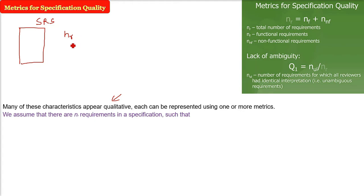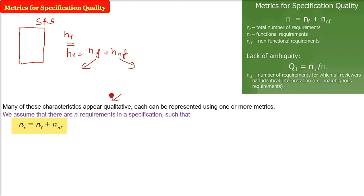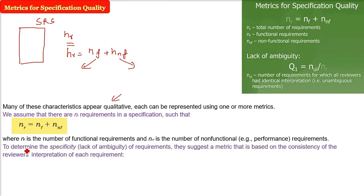The n sub r is the requirements in specification. So, what is the nr? nr will be nf plus nnf. All these f and nf, these are subscript. So, this first one is the functional requirement. The second one is the non-functional requirement. Non-functional requirements are specifically written and non-functional requirements are some explicit, some are implicit. Now, this is the value.